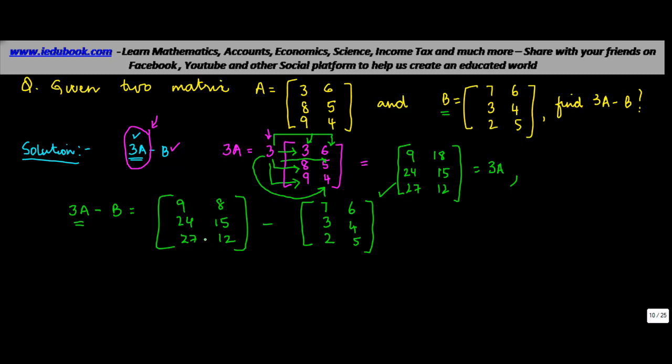Now what is the order of the first matrix? The order is basically the number of rows into number of columns. How many rows do we have? 1, 2, 3, and we have 1, 2 columns. Similarly in this case we have 1, 2, 3 rows and 1, 2 columns. Now given that the order is the same, we can carry out subtraction.